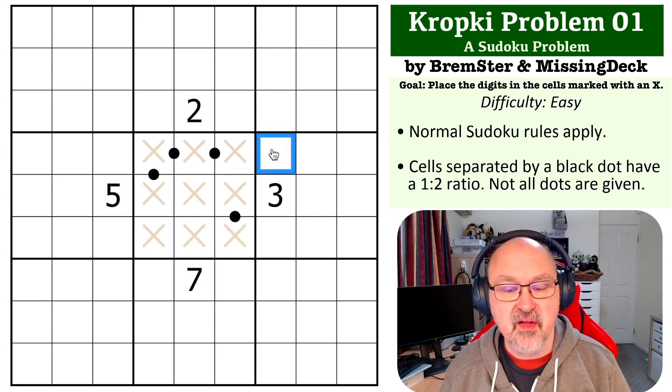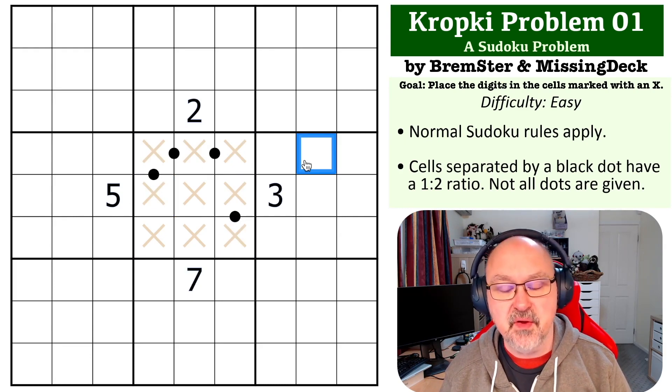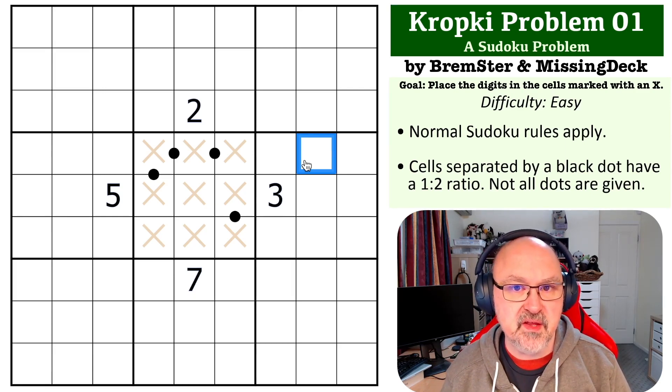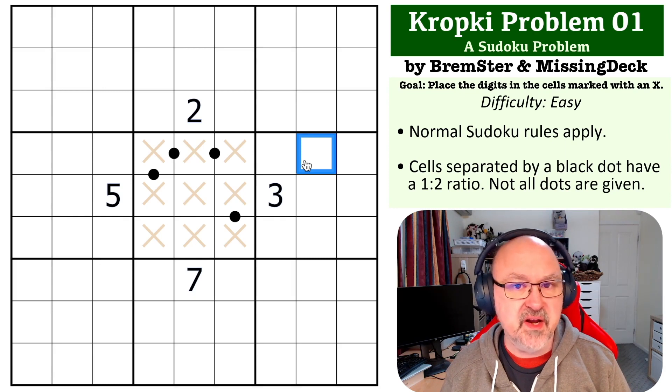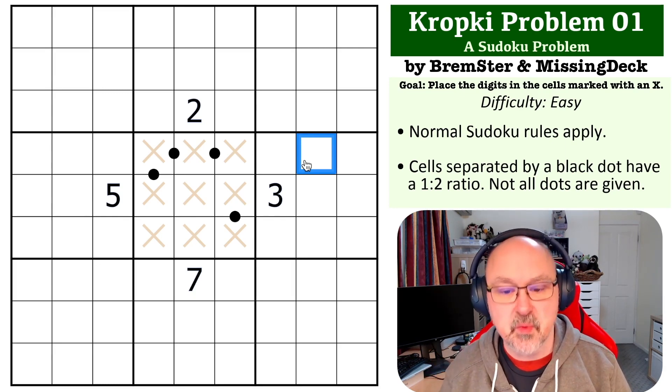The way I like to think about it is the digits that cannot go on a black dot are five, seven, and nine. The reason they cannot go on a black dot is there's no valid one to two ratio for them within the digits one to nine. Half of five, seven, and nine are not even integers, and double are outside one to nine.